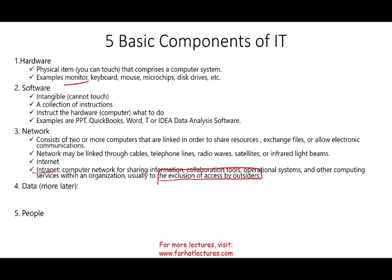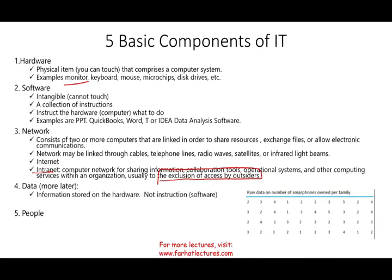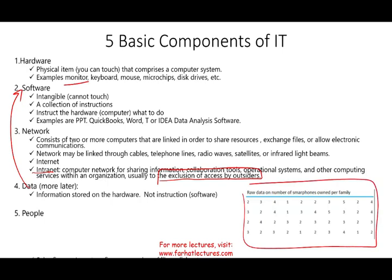Fourth is data. Data is basically information stored on hardware — it could also be on paper that you then transfer. Data is not instructions; data is not software. You take the data and input it into the software, but the data itself is raw — sales figures, inventory figures, number of likes on a picture, number of clicks on a page. We'll talk about data much more later on.